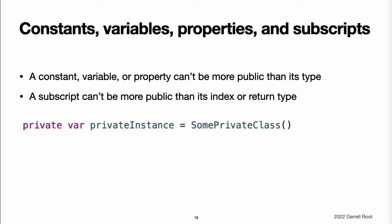Constants, variables, properties, and subscripts. A constant, variable, or property cannot be more public than its type. It is not valid to write a public property with a private type, for example. Similarly, a subscript cannot be more public than either its index type or return type. If a constant, variable, property, or subscript makes use of a private type, the constant, variable, property, or subscript must also be marked as private.